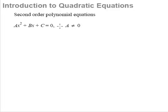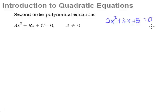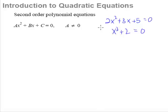Examples of quadratic equations include 2x² plus 3x plus 5 equals 0 — this is a quadratic equation. Another example is x² plus 2 equals 0. So as long as an equation involves x², it is known as a quadratic equation.